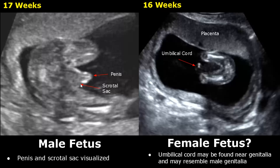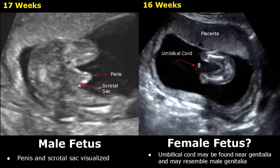Here we have a male fetus at 17 weeks. It is a transverse view of the perineal region. We can see the penis and a small scrotal sac between the thighs. These are the thighs. This dome-shaped structure is the scrotal sac.